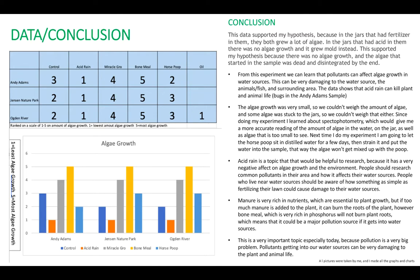The algae growth was very small, so we couldn't weigh it, which is why we ranked it on a scale of one to five. But it was very obvious which ones had the most algae growth. I think that acid rain is a topic that would be very helpful to research because it has such a bad effect on the environment. It can change up everything from the birds to the fish.